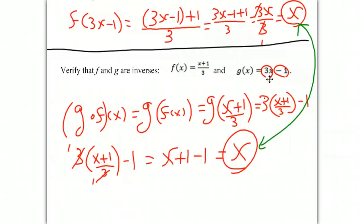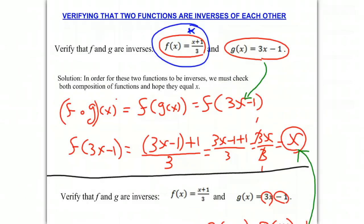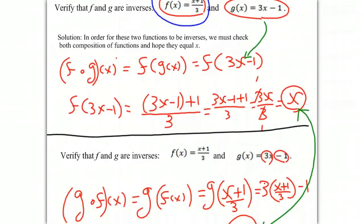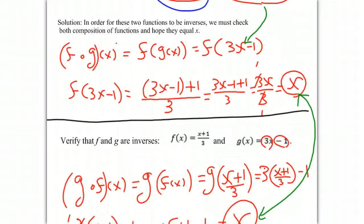Now go back to your original functions and finish up. See if you also get x when you do g composed with f of x. If you do get x, you are done and you've done it correctly. If you did it wrong, just come back here, review all of our steps, and see where you went wrong. Thank you, and have a good day.